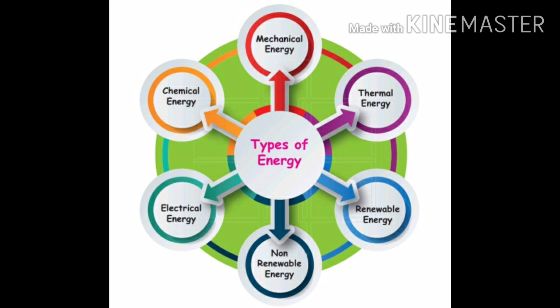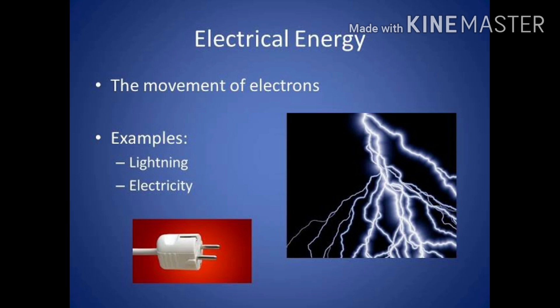Types of energy: electrical energy, chemical energy, mechanical energy, thermal energy, renewable energy, and non-renewable energy. Electrical energy — the movement of electrons is called electrical energy. Examples: lightning and electricity. Chemical energy — energy that is available for release from chemical reactions.